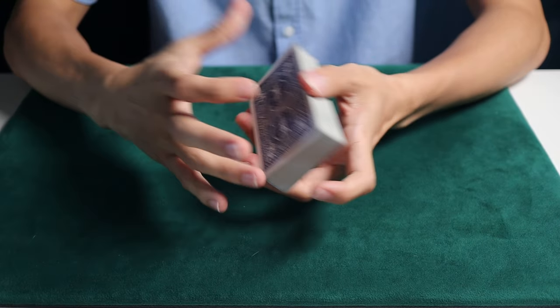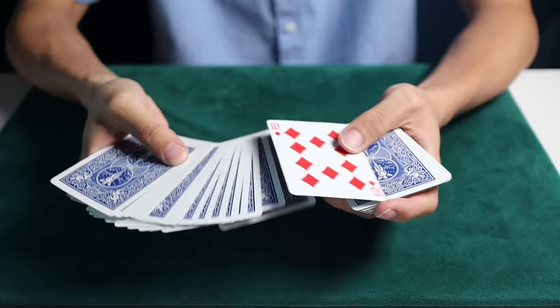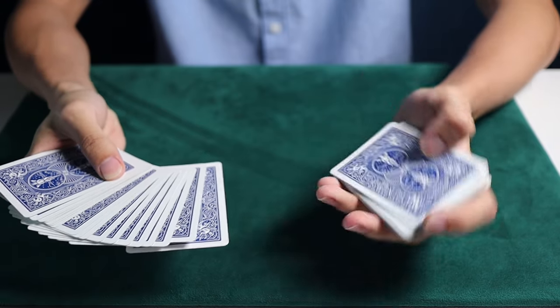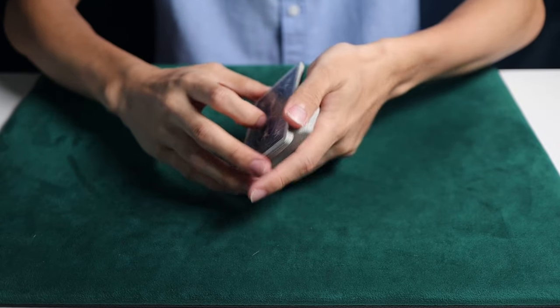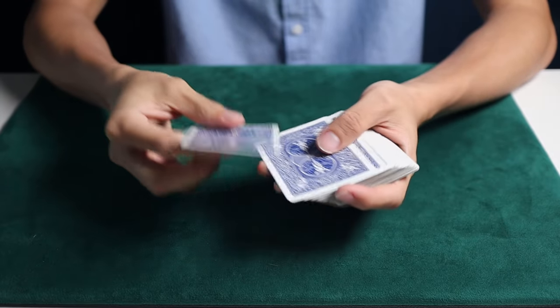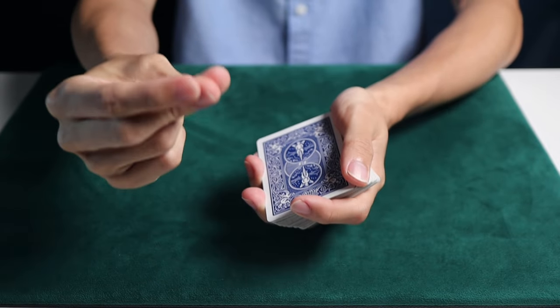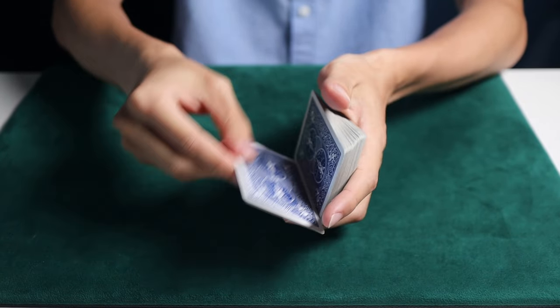So now I tell the spectator to just pick a card. If they pick this one, which is the 10 of diamonds, the 10 of diamonds right here. So I cut the card like this. And now the 10 of diamonds is not on top, right? It's not their card. But I just snap my finger like this, and the card will jump to the top.